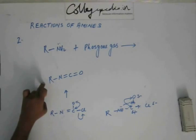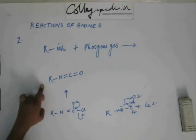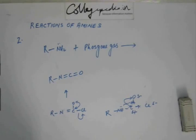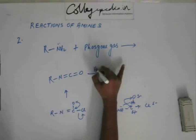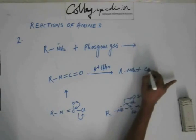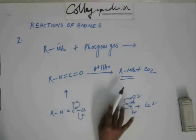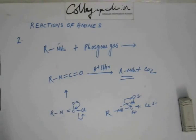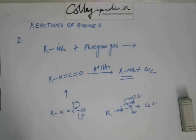This isocyanate you have been seeing since many reactions — you saw it in Hofmann bromamide, Curtius reaction, and Schmidt reaction. When you hydrolyze this isocyanate you get back the amine and CO₂ gas. So you can recover the amine we started with. This step was seen in three reactions for the methods of preparation of amines, so you must remember this — that is what happens when you hydrolyze an isocyanate.